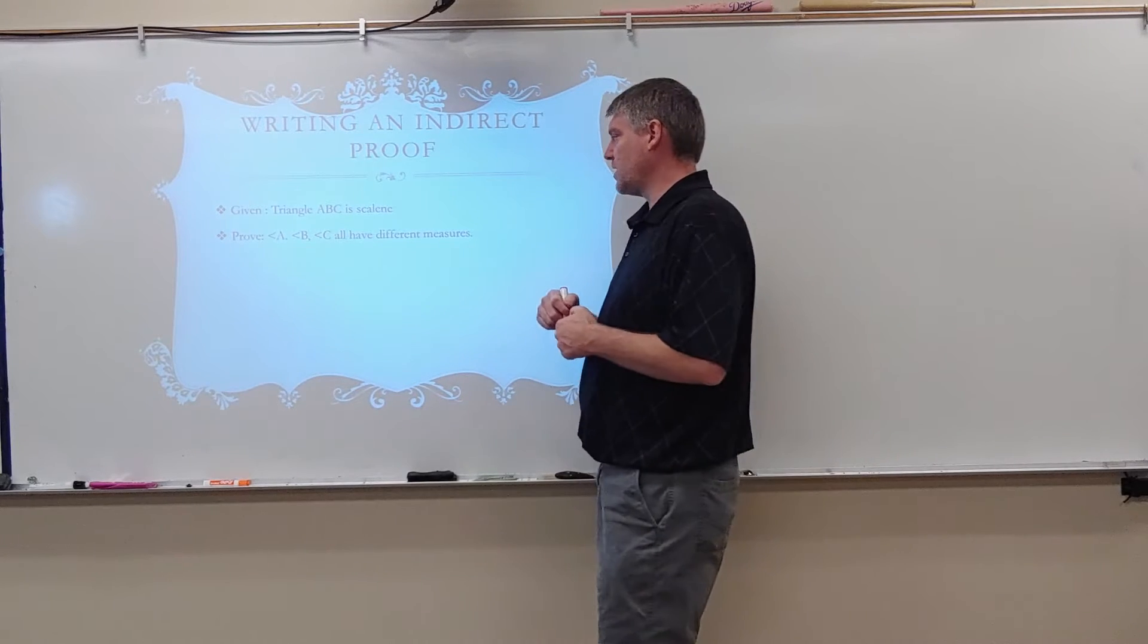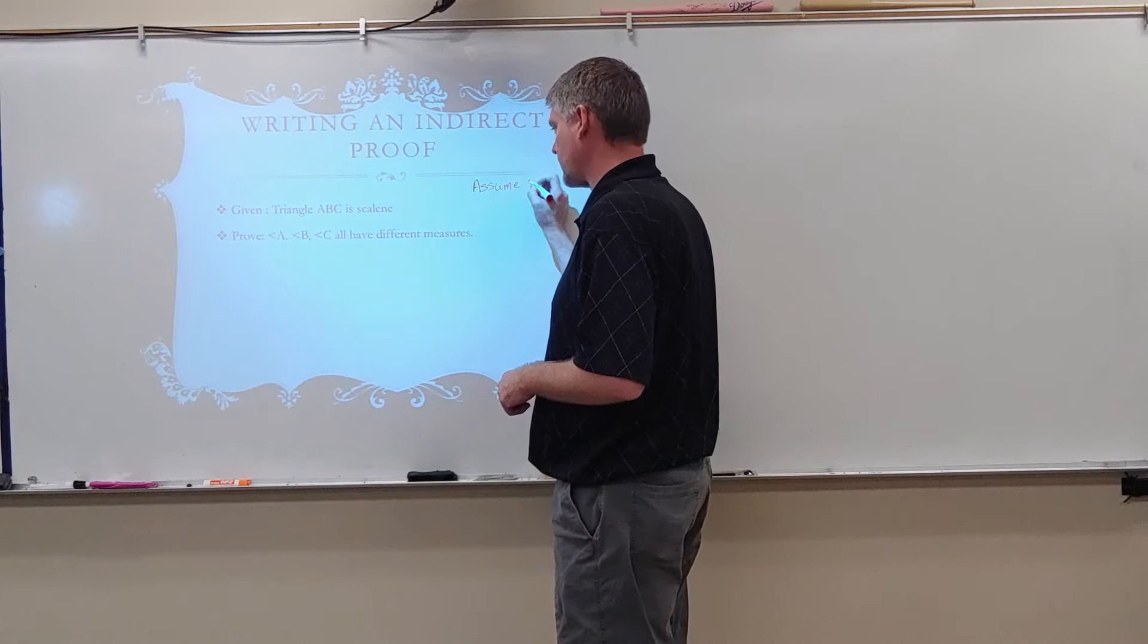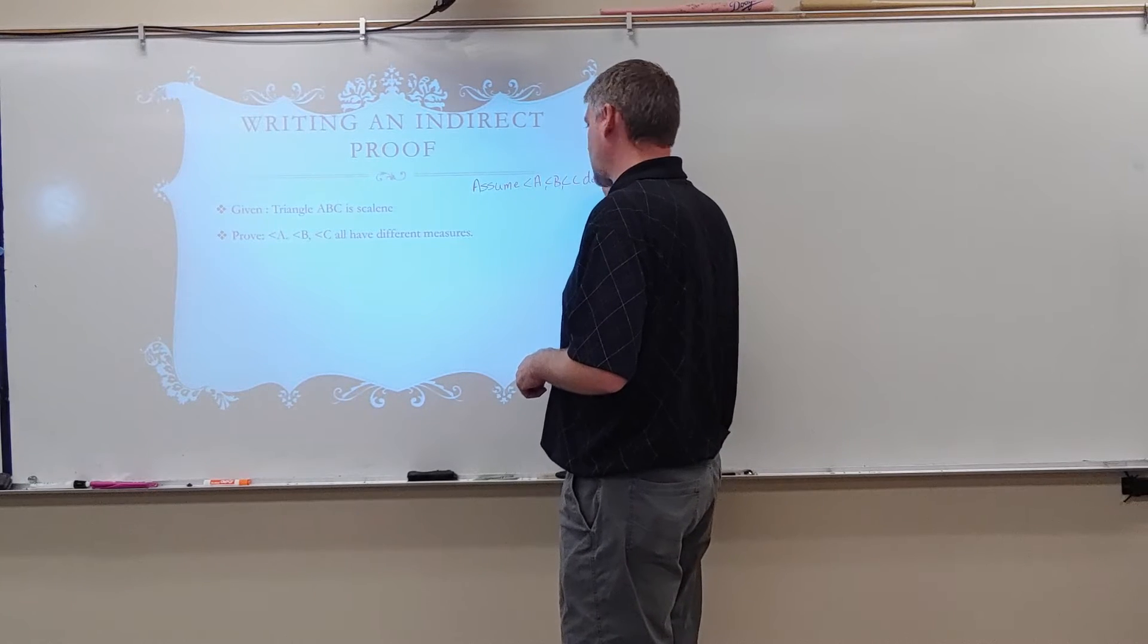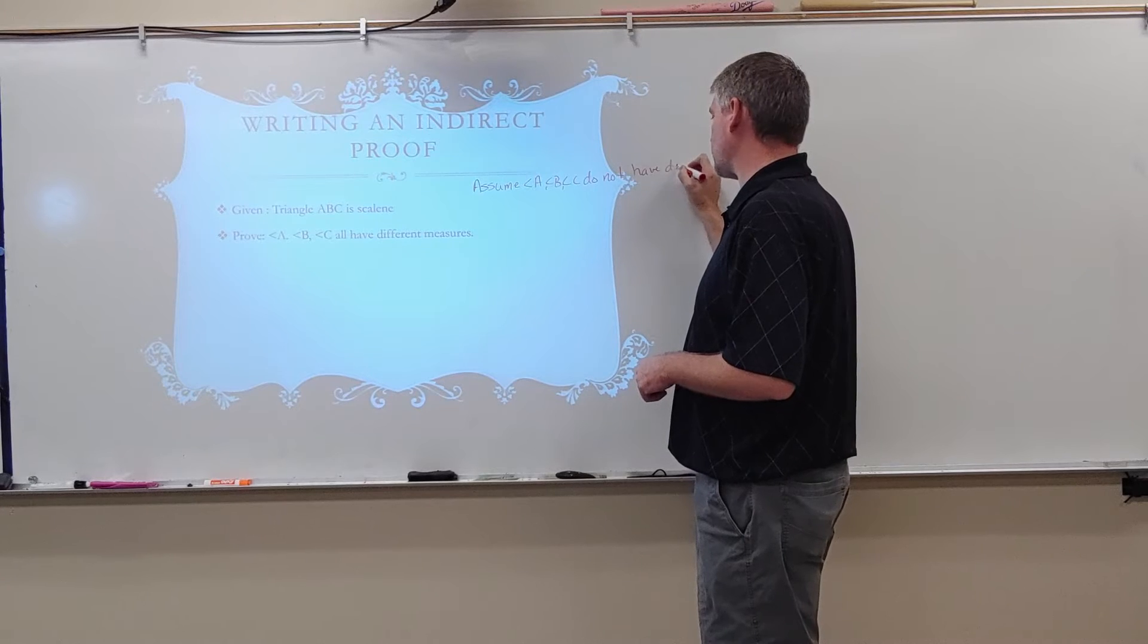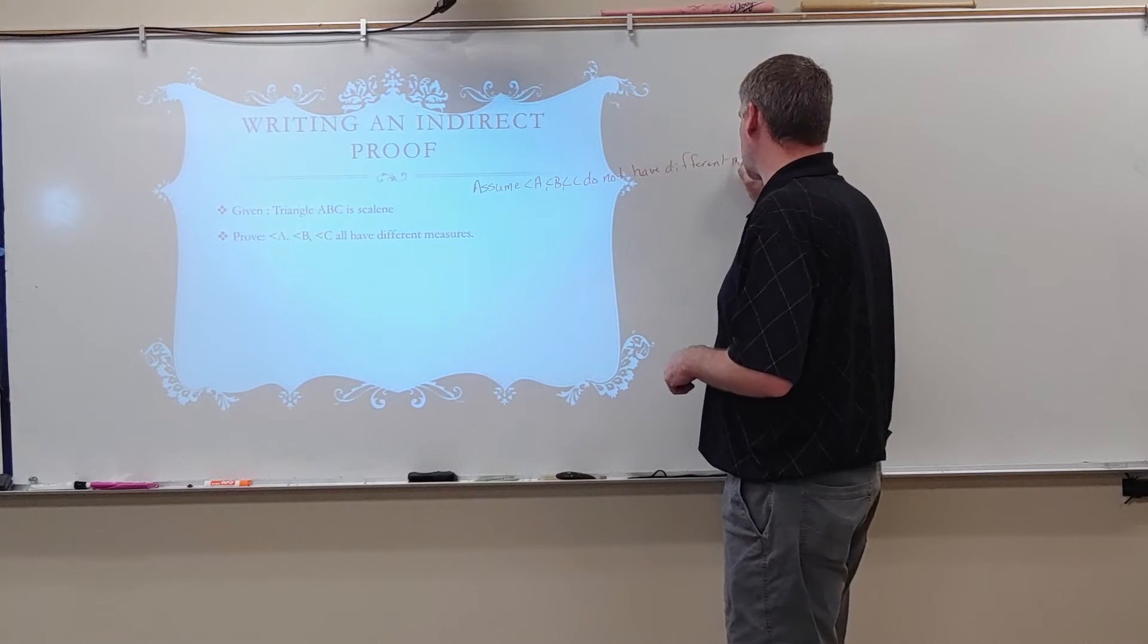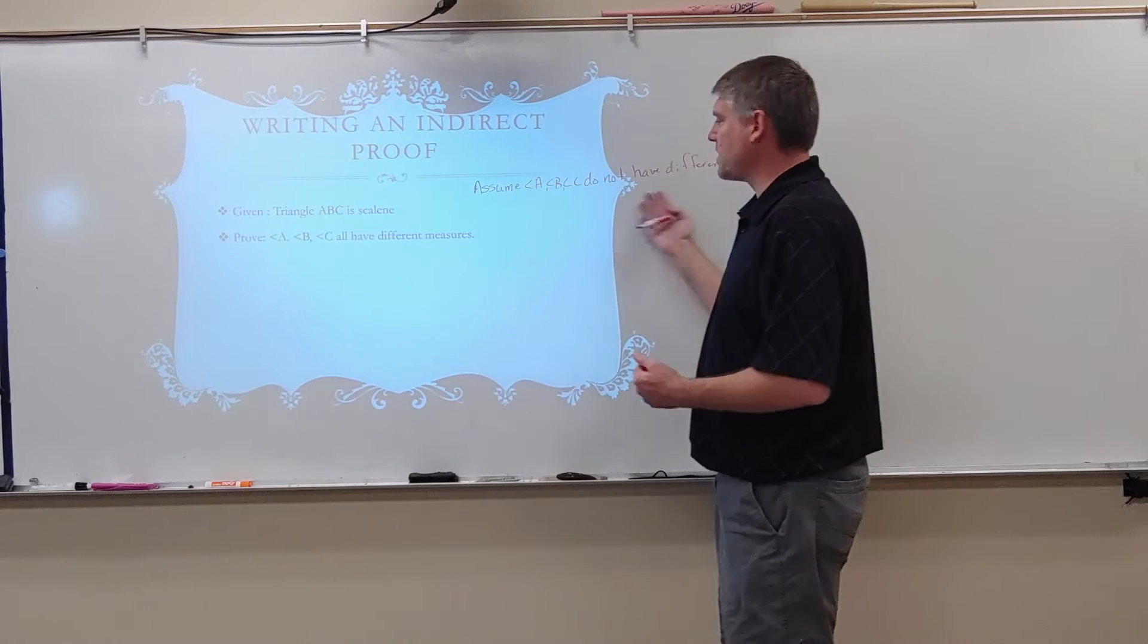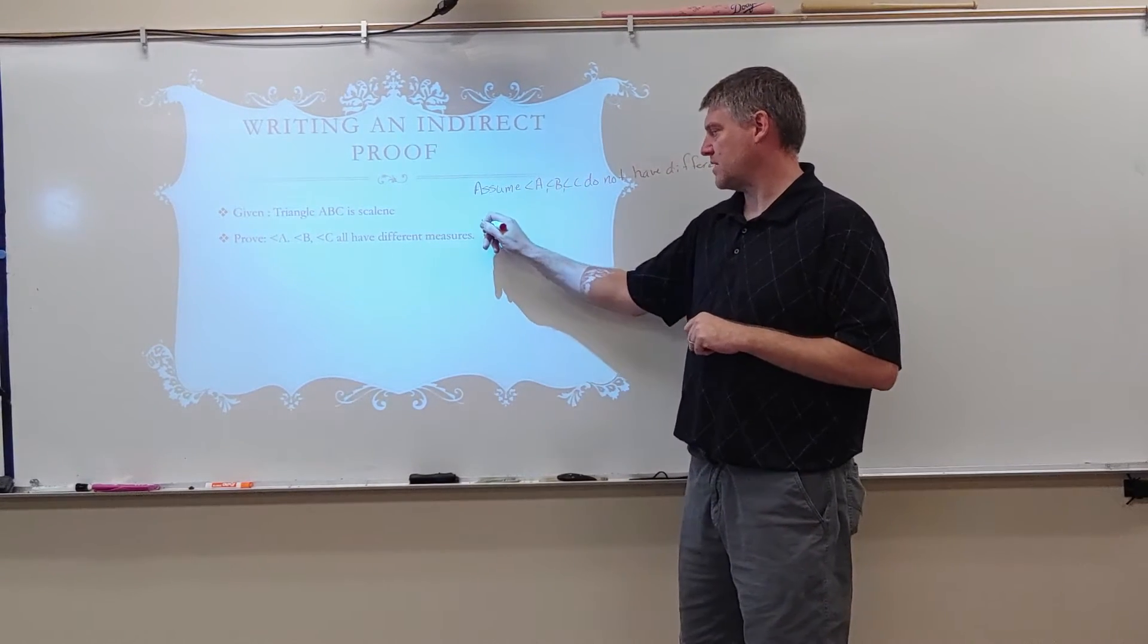So, I'm going to assume angle A, angle B, and angle C do not have different measures. So that's the first thing I'm going to do. I'm going to take my prove statement and negate it. Well, what does this mean?